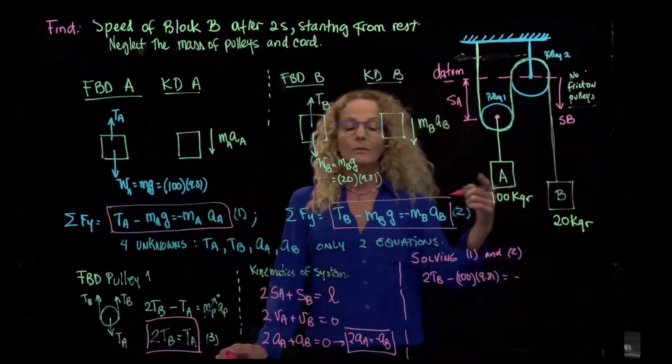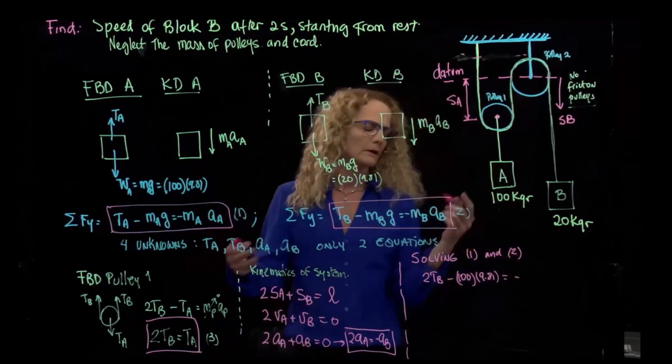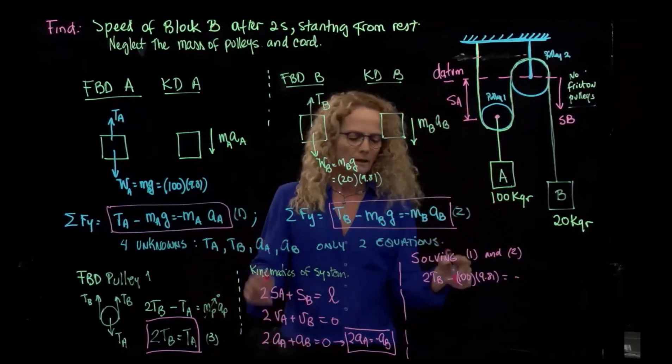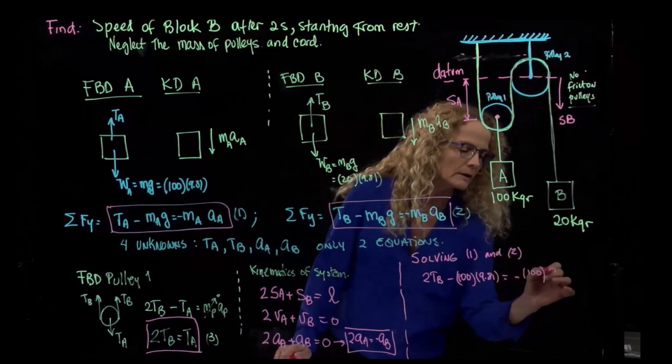So I will give my mass is 100 times acceleration of A, and then the second equation will be TB minus the mass, which is 20, times 9.81 equals negative.